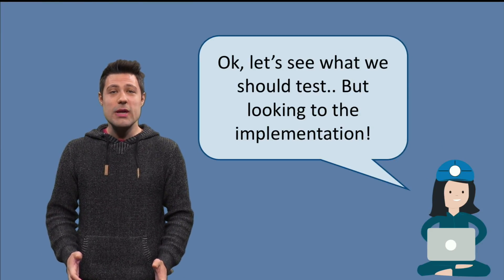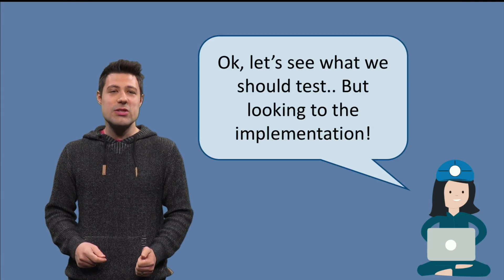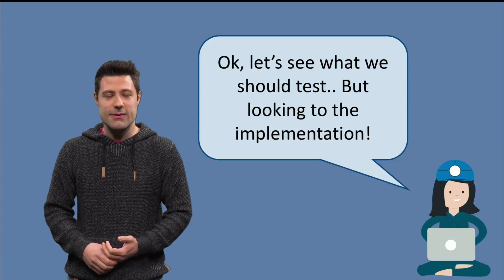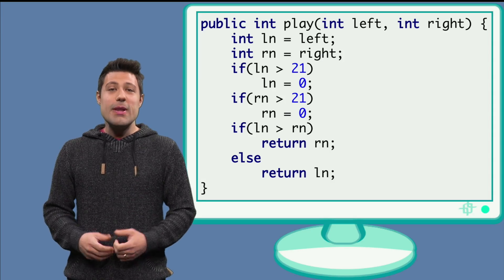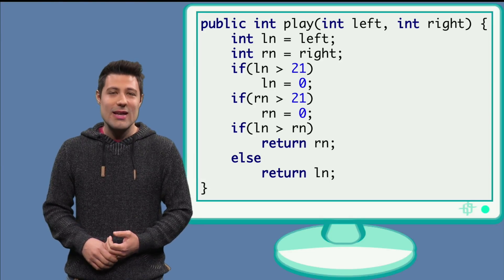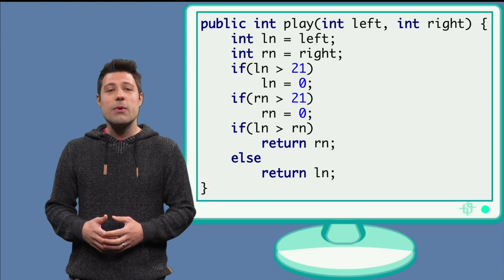Our job here will be to look at the implementation and see what kind of tests we can derive from that. So, the play method receives two parameters, left and right, which are both integers.